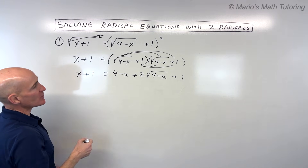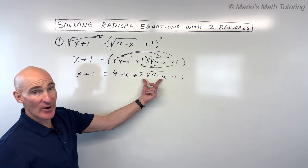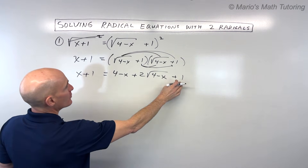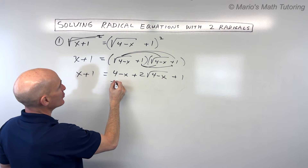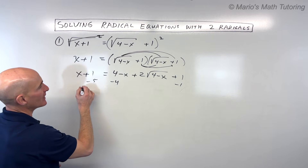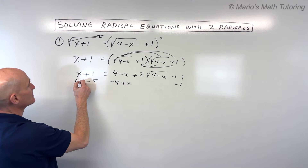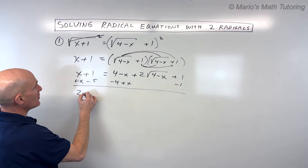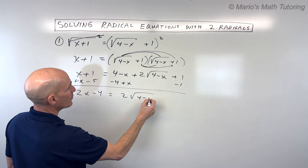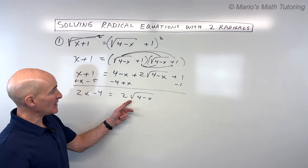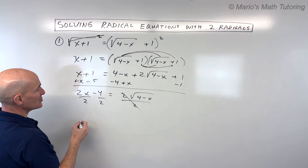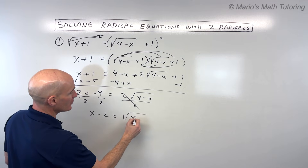On the left side we've got x plus one. Now we want to get the radical by itself, so we subtract five from both sides and add x to both sides. That gives us two x minus four equals two times the square root of four minus x. Dividing everything by two gives us x minus two equals the square root of four minus x. Now the square root is by itself on one side.